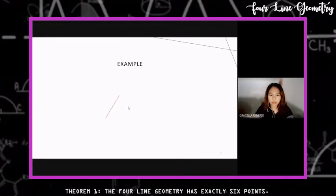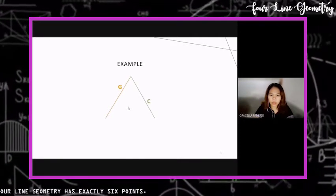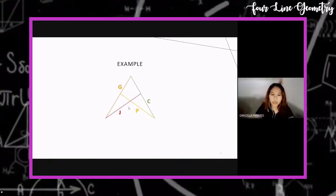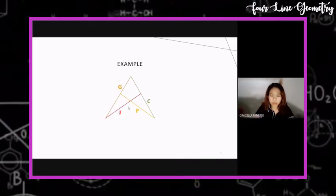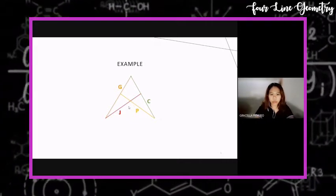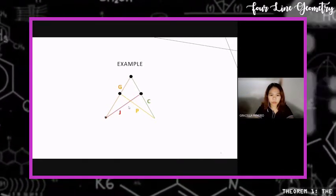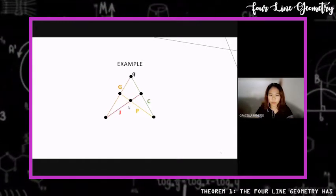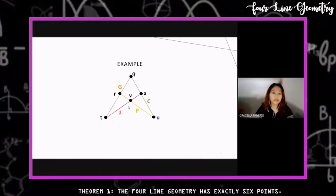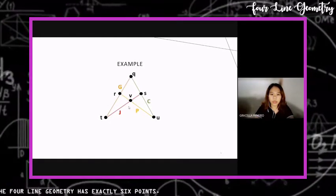For example, we have line G, line C, line P, and the fourth line J. With these lines we also have intersection points. We have six points in total, which we name point Q, point R, point S, point P, point U, and point B.